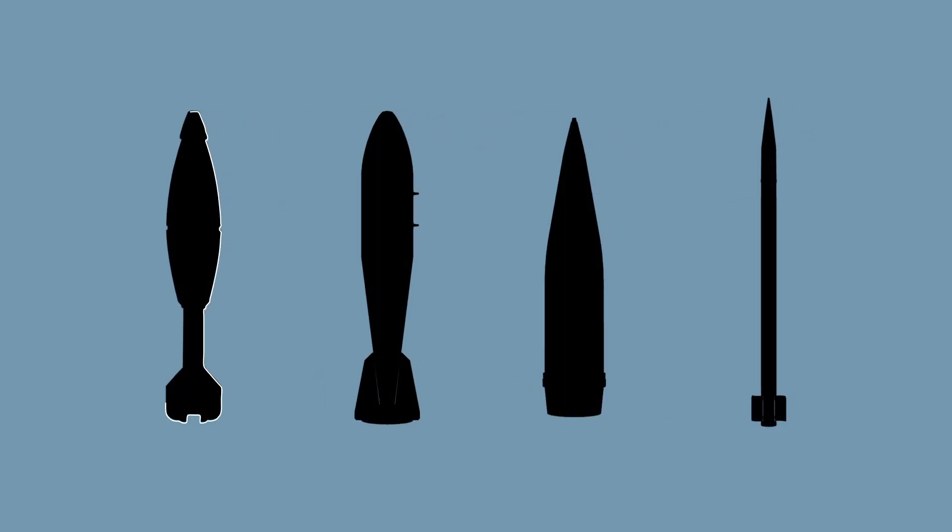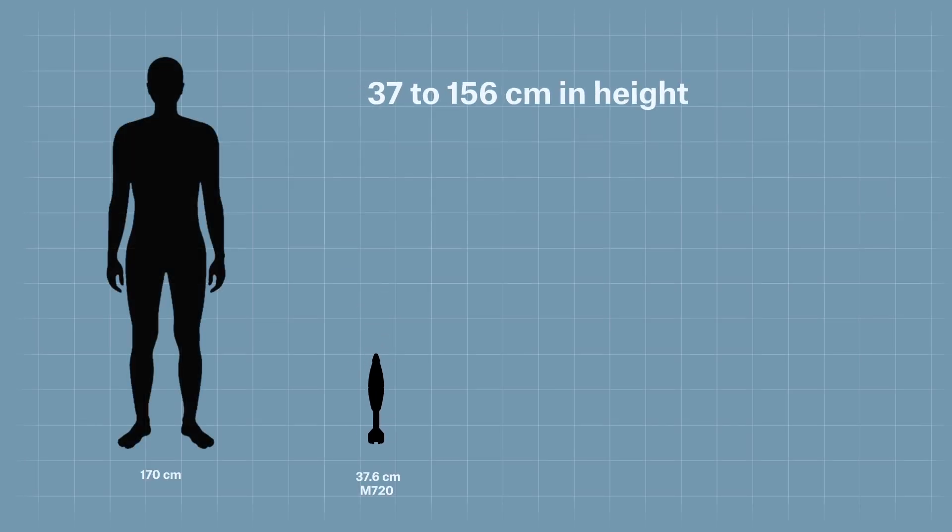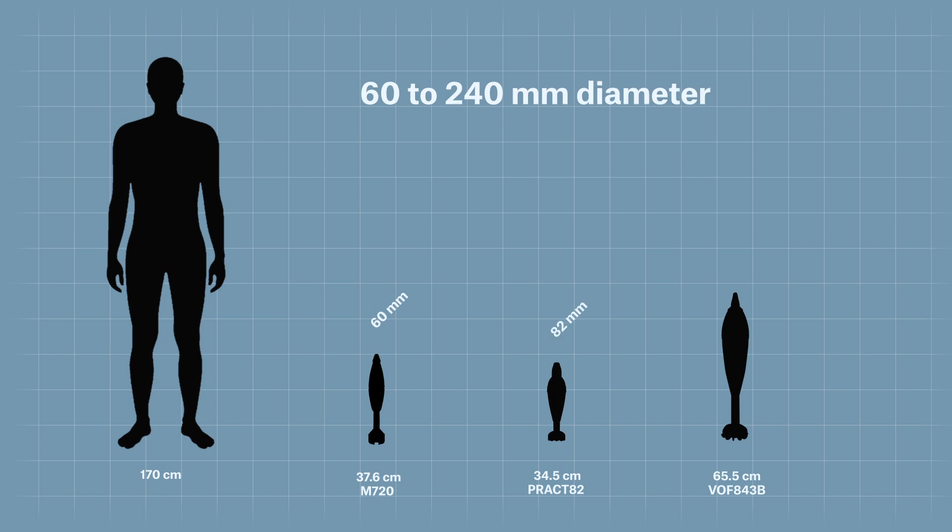Compared to other munition categories, mortar projectiles are typically relatively short with a distinctive teardrop shape. Common mortar projectiles range from 37 to 156 centimeters in height and 60 to 240 millimeters in nominal diameter.